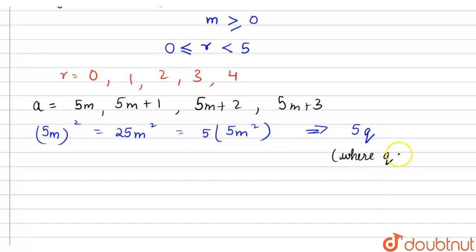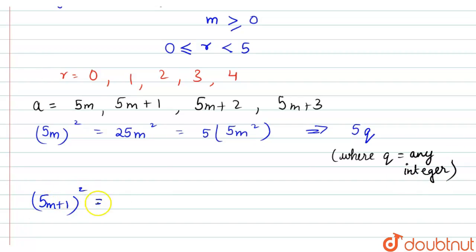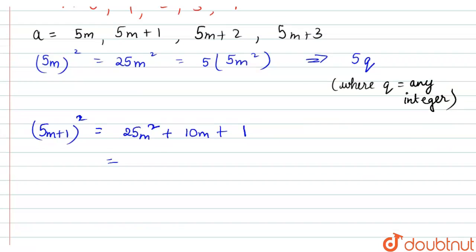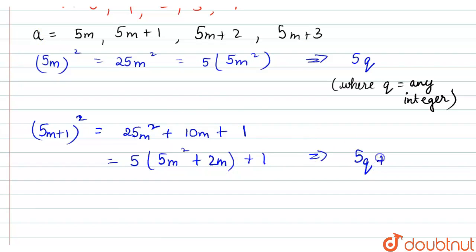If we take (5m plus 1)² and expand using the formula a² + 2ab + b², we get 25m² plus 10m plus 1. Taking 5 common, we can write 5(5m² plus 2m) plus 1. This can be written in the form 5q plus 1, where q is any integer.